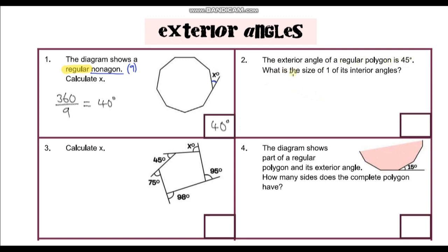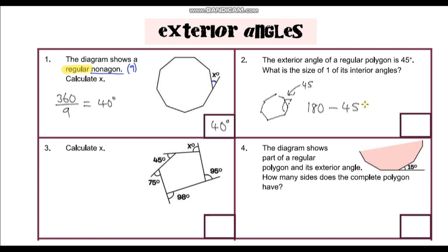Question two: the exterior angle of a regular polygon is 45 degrees — what is the size of one of its interior angles? There is a relationship between interior and exterior angles: they sum to 180 degrees. If we draw a shape, the exterior angle and interior angle form a straight line, so they must sum to 180 degrees. Therefore, 180 minus 45 gives us 135 degrees — that is my answer.